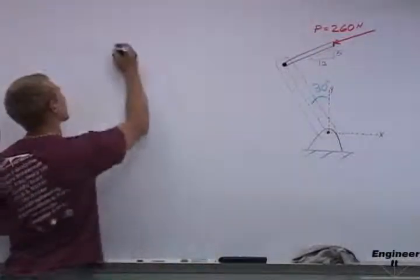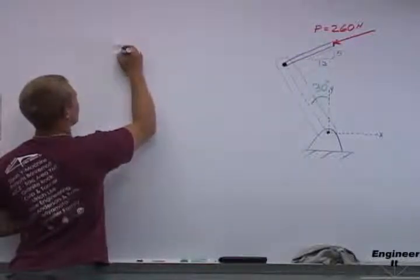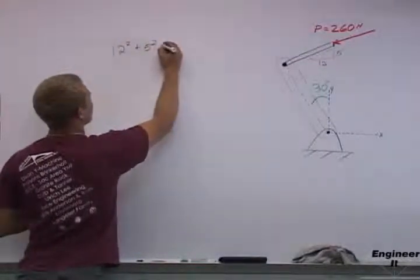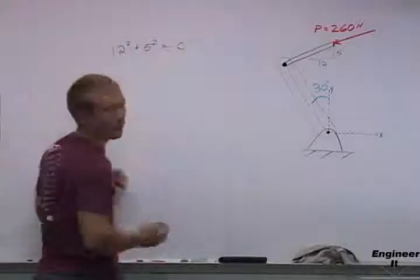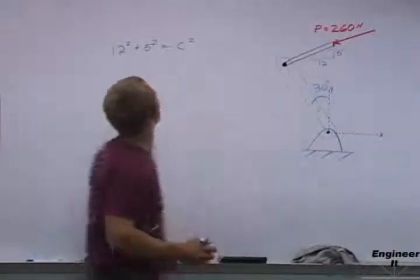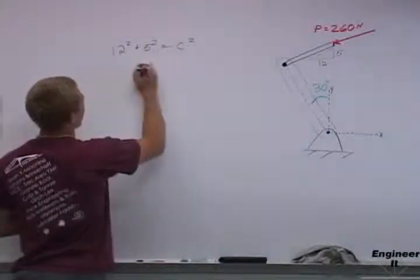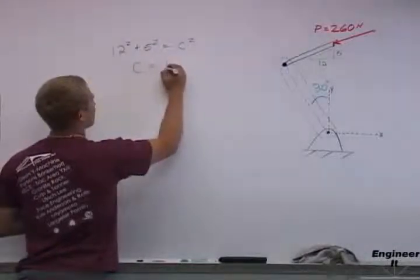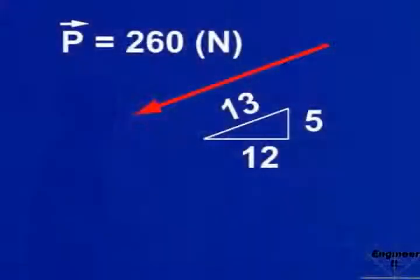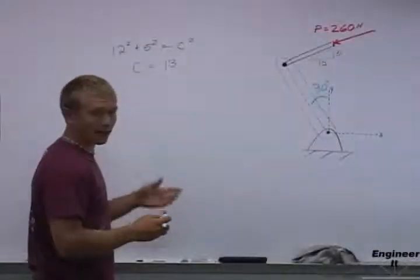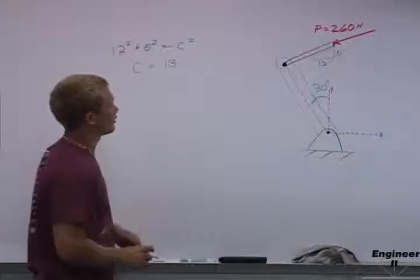We know that the Pythagorean theorem would say 12 squared plus 5 squared equals c squared, the hypotenuse direction here. If we work this down, we'll find that c equals 13. Now we have all the information we need to use ratios for this.